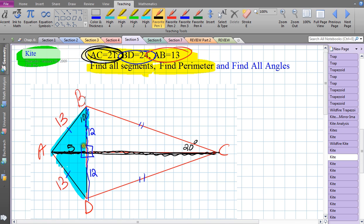Using the fact that the entire diagonal AC is 21, well 21 take away 5 is going to be 16, because now we got 5 plus 16, well that equals 21. We're trying to find all the segments, we're getting closer and closer, and ultimately we're going to find the perimeter.